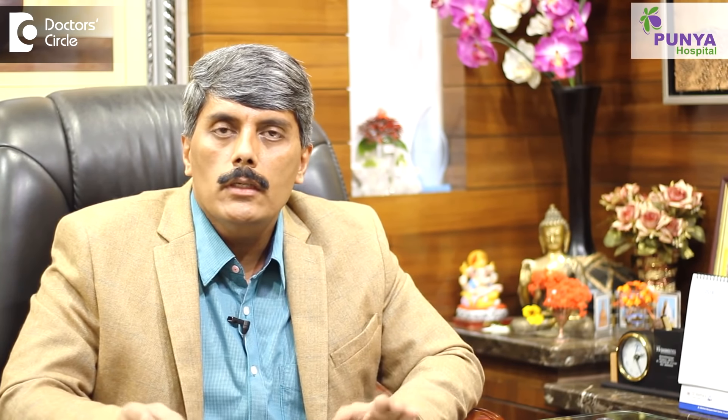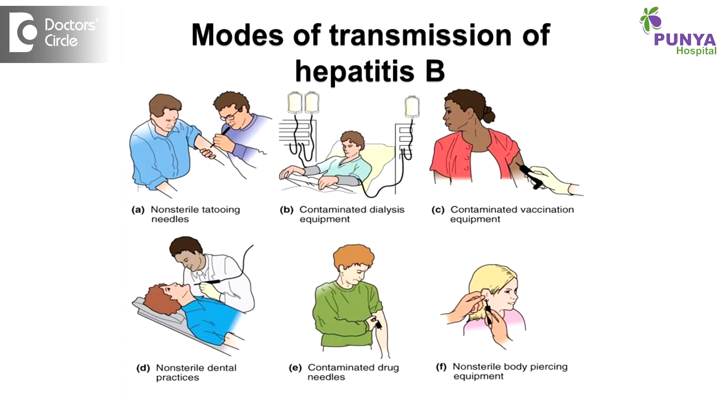On the contrary, Hepatitis B and C are infective hepatitis. They are transmitted through sexually transmitted disease, infected blood transfusion, or getting shaved by an infected blade — though the latter is not commonly seen now because we use disposable blades. These are the modes of transmission of hepatitis.